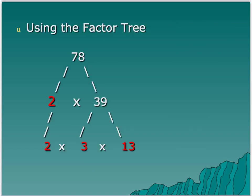Another way to figure out prime factorization is to use a factor tree. This same number, 78, breaks down to 2 times 39. 2 is prime, so it comes straight down. And 39 breaks up into 3 and 13. So our prime factorization again is 2 times 3 times 13.